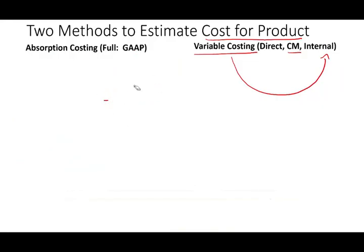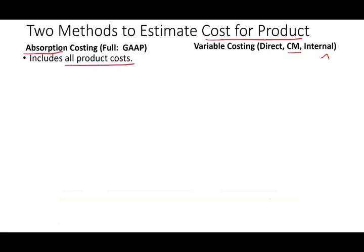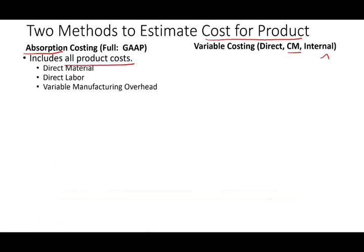Absorption costing — sometimes called full costing — absorbs all product costs. When costing the product, it includes direct material, direct labor, variable manufacturing overhead, and fixed manufacturing overhead. These are the product costs.